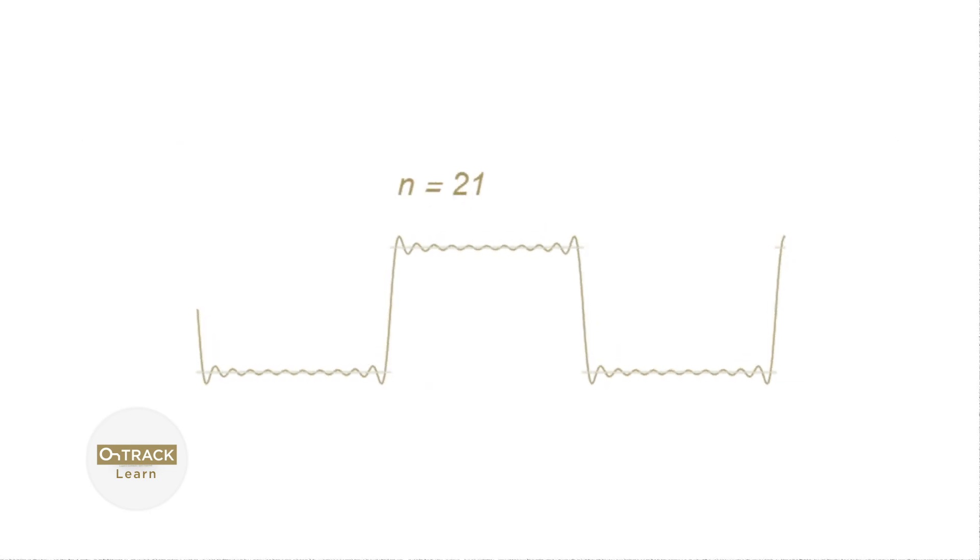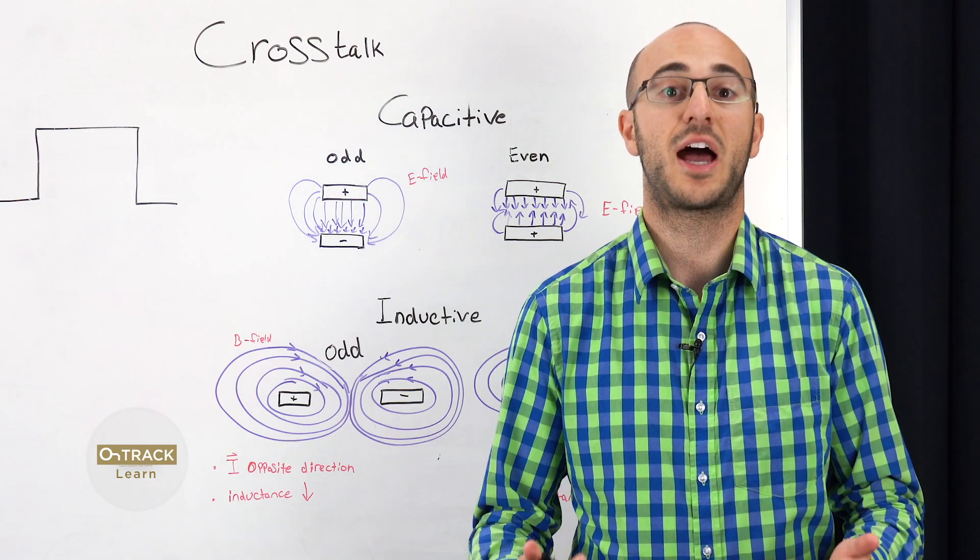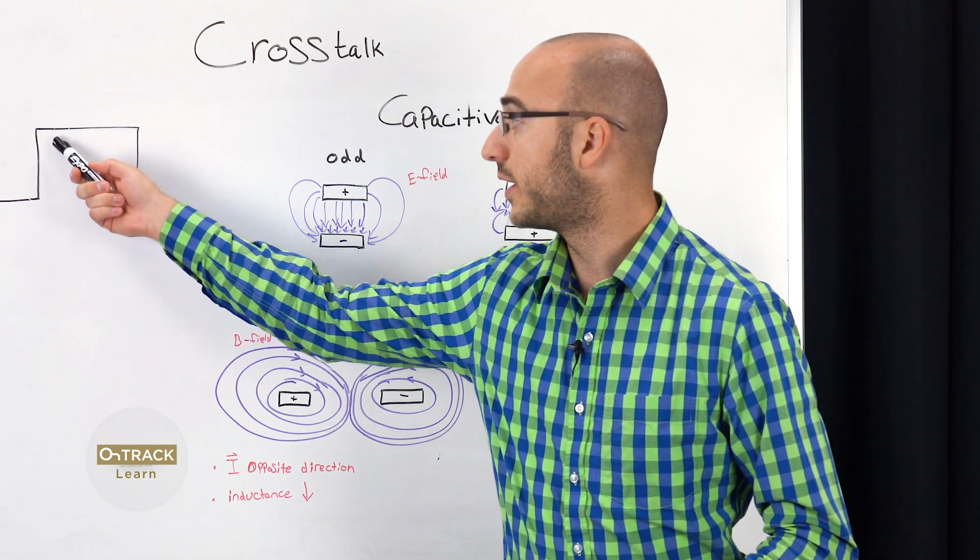And so to recreate a very good looking square wave, we have to go to very high frequency. And this is why everything needs to be thought of as high frequency, because you have these high frequency elements right here.